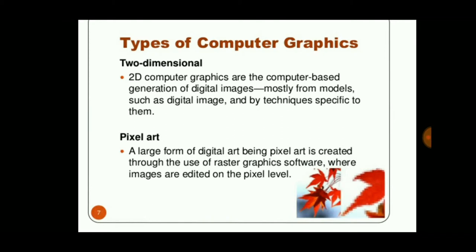There are two different types of computer graphics: two-dimensional and three-dimensional. Two-dimensional uses only 2D, that is length and breadth — not height. It uses a digital image as the reference to make it and uses pixel art technology, that is raster graphics software.